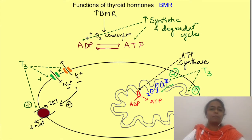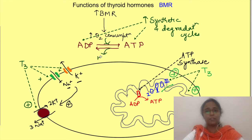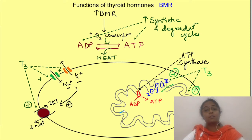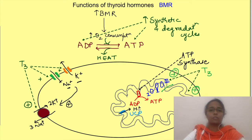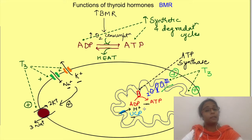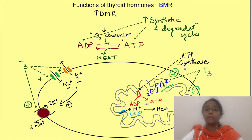This increased ATP production and utilization causes increased oxygen consumption and hence heat generation. Thyroid hormones also increase the synthesis of uncoupler protein, which uncouples oxidation and phosphorylation reactions — that is, proton movement is uncoupled from the synthesis of ATP. This leads to heat generation without even ATP production and utilization.